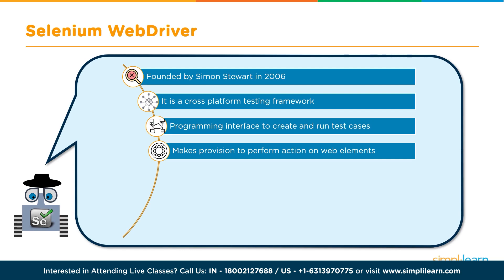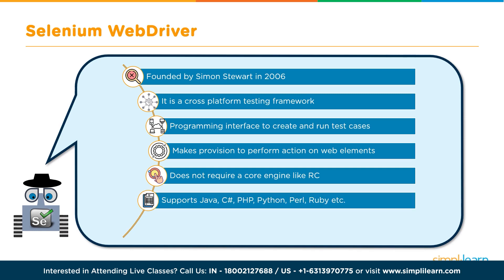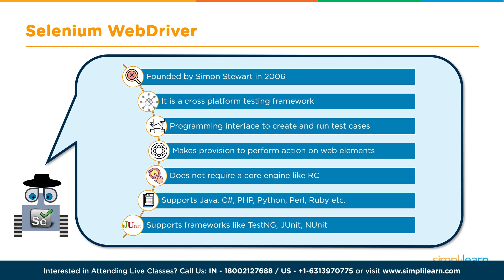Second, Selenium provides REST APIs to interact with the browser — everything done through your script happens via REST calls. Third, the JSON Wire Protocol — JSON (JavaScript Object Notation) is a standard for exchanging data over the web. When you launch a web application through your script, Selenium creates a JSON payload and posts the request to the browser driver. Fourth, the browser drivers themselves — there is a specific driver for each browser.